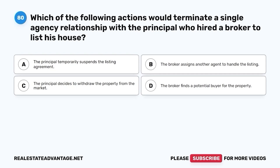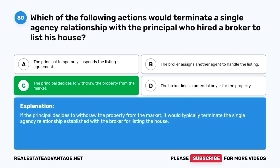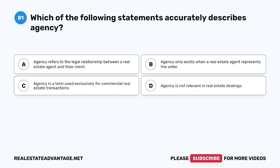Question 80. Which of the following actions would terminate a single agency relationship with the principal who hired a broker to list his house? A. The principal temporarily suspends the listing agreement. B. The broker assigns another agent to handle the listing. C. The principal decides to withdraw the property from the market. D. The broker finds a potential buyer for the property. The correct answer is C. If the principal decides to withdraw the property from the market, it would typically terminate the single agency relationship established with the broker for listing the house.